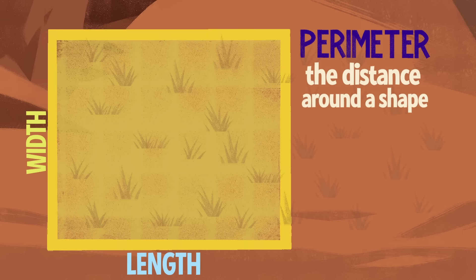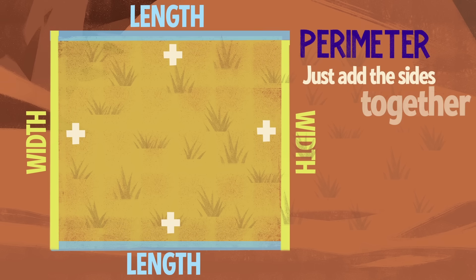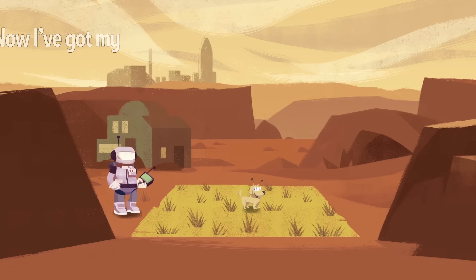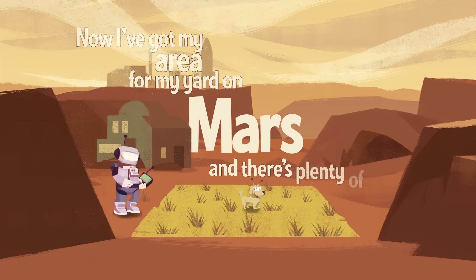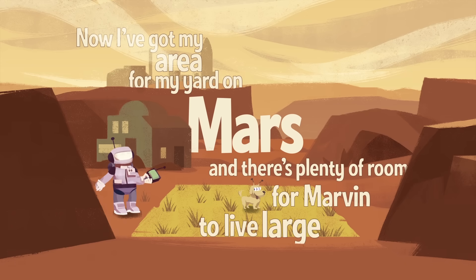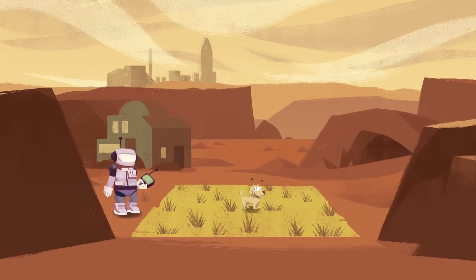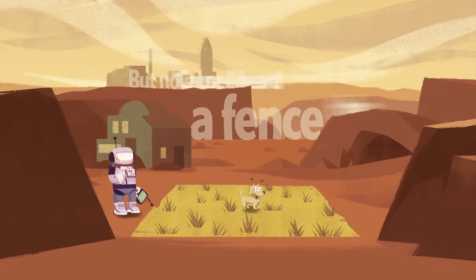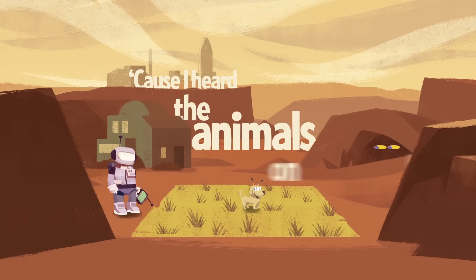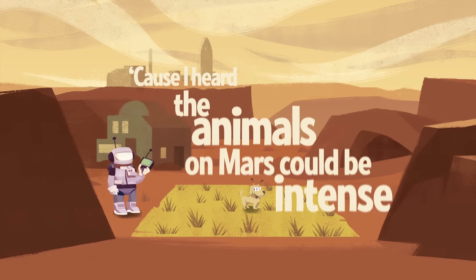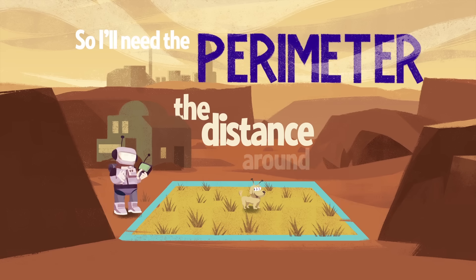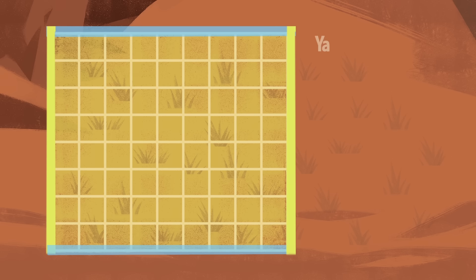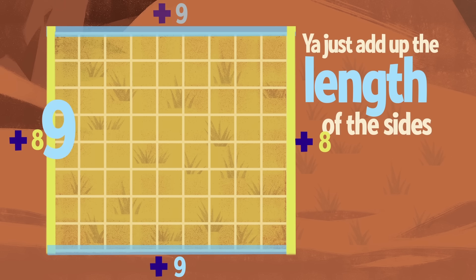Now I've got my area for my yard on Mars, and there's plenty of room for Marvin to live large. But now I need a fence, cause I heard the animals on Mars could be intense. So I'll need the perimeter — the distance around my whole yard.